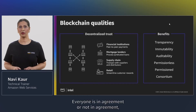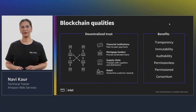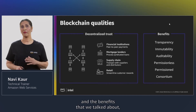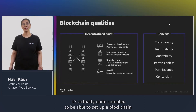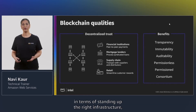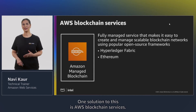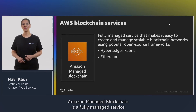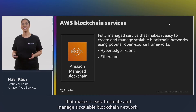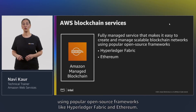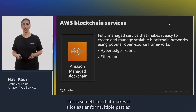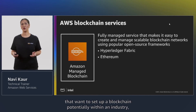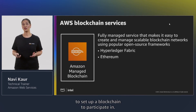Everyone is in agreement or not in agreement based on a consensus model. Now, in order to get this decentralized trust and realize those benefits, we need to be able to set up the blockchain — which is actually quite complex in terms of standing up the right infrastructure, using the right applications and code. One solution is AWS blockchain services. Amazon Managed Blockchain is a fully managed service that makes it easy to create and manage a scalable blockchain network using popular open source frameworks like Hyperledger Fabric and Ethereum, making it much easier for multiple parties or peers on a network to set up a blockchain to participate in.